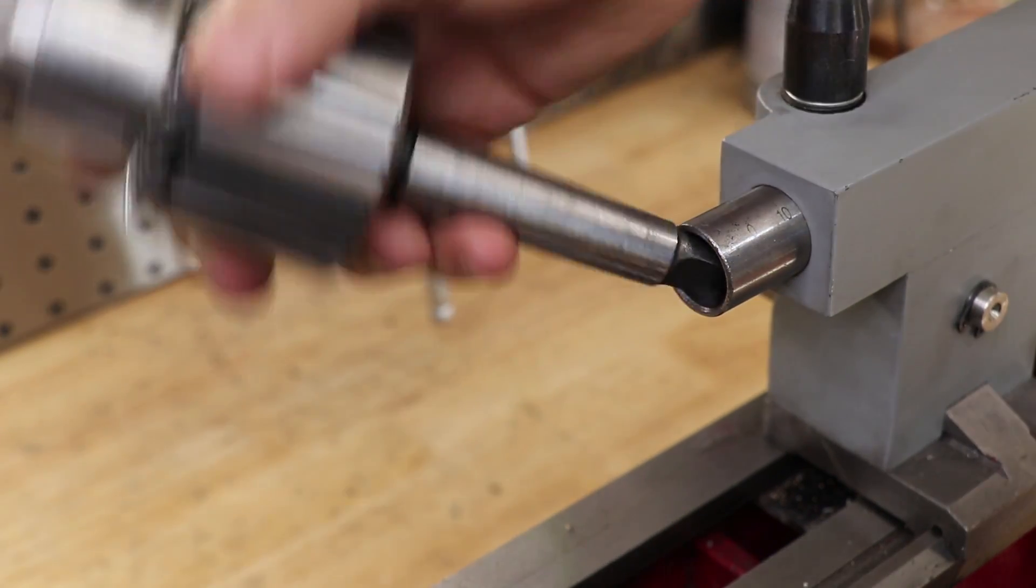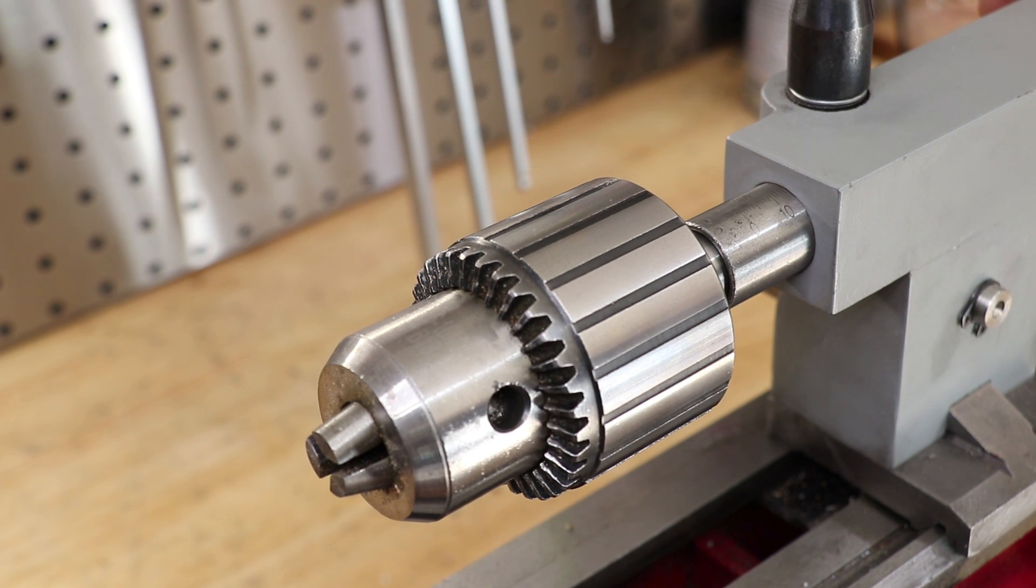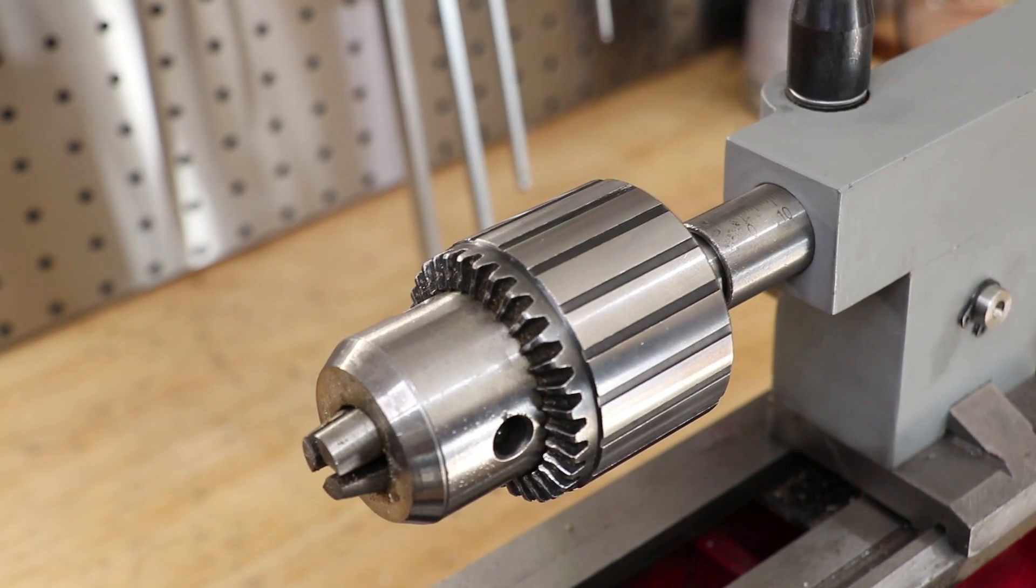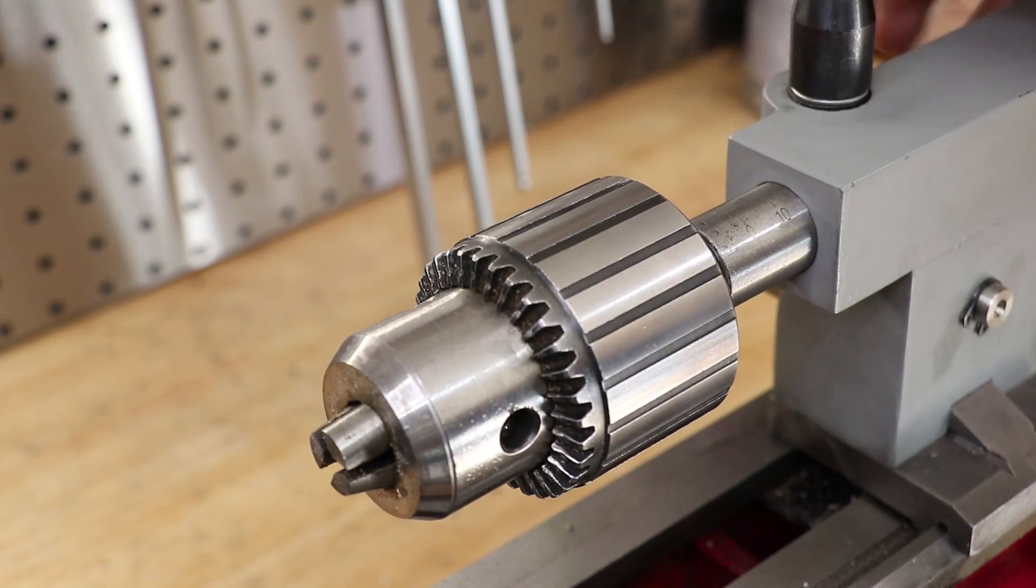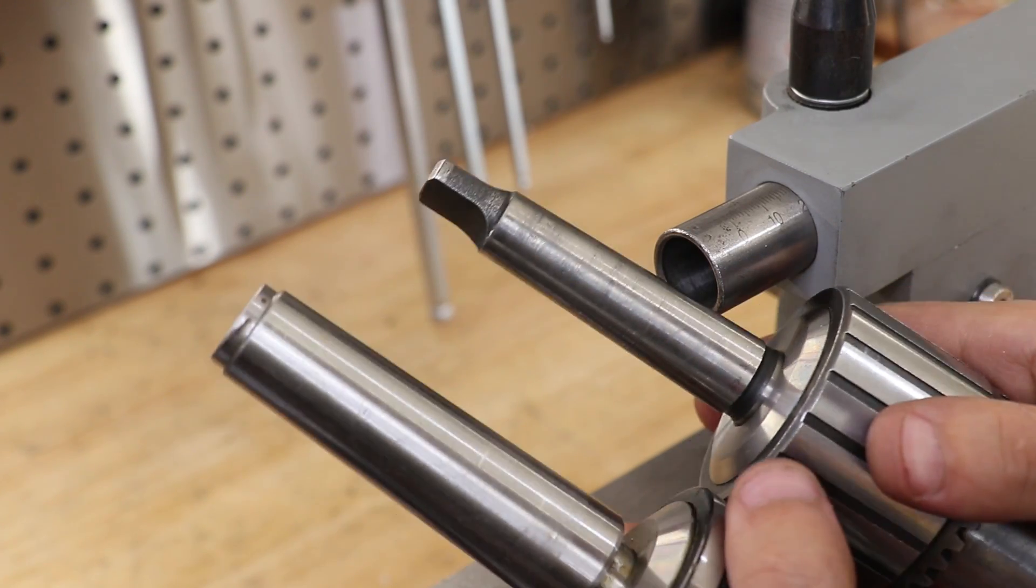However, a tailstock drill chuck is something that you need to buy, and I would buy it on day one. I've never noticed too much difference between the cheaper and more premium ones, so a $40 Jacob's chuck should do fine. Just make sure it's connected to a taper that suits your tailstock.